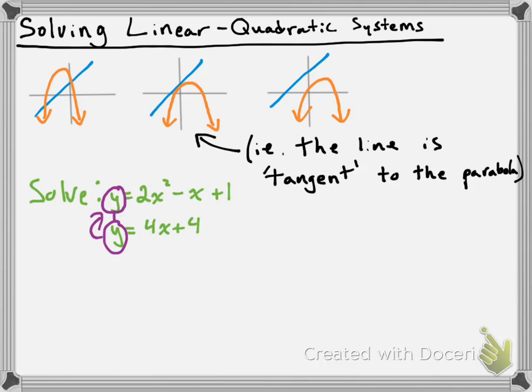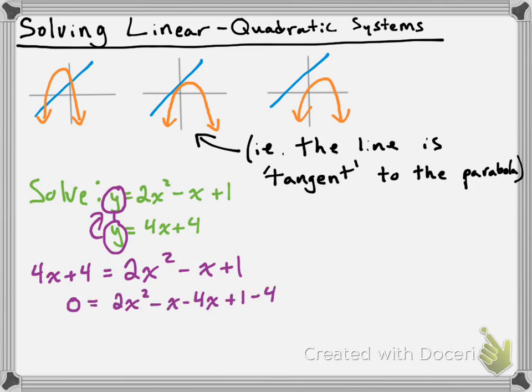We're going to substitute one y value into the other. If I substitute 4x plus 4 in for y in my quadratic, that looks like: 4x plus 4 equals 2x squared minus x plus 1. We've created a quadratic equation. It's not in proper form yet, so I'm going to subtract 4x and 4 from both sides and collect like terms, giving me 0 equals 2x squared minus 5x minus 3.